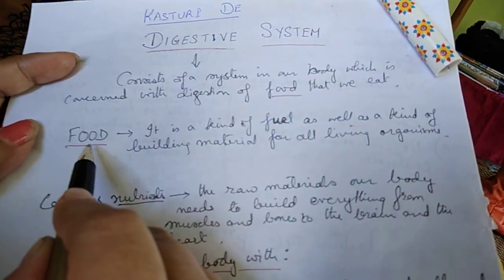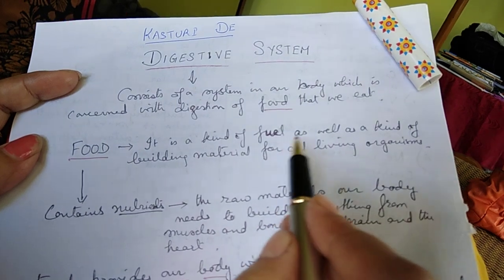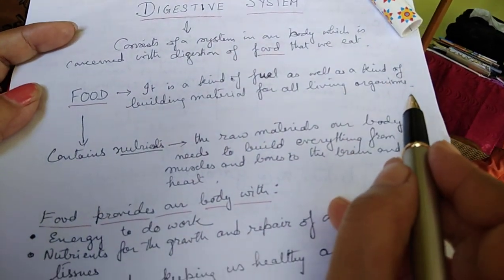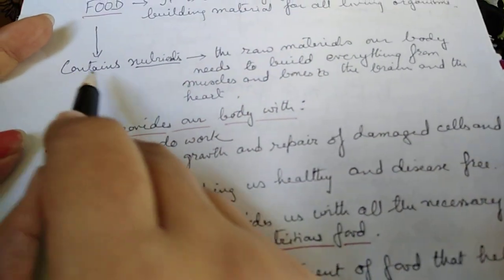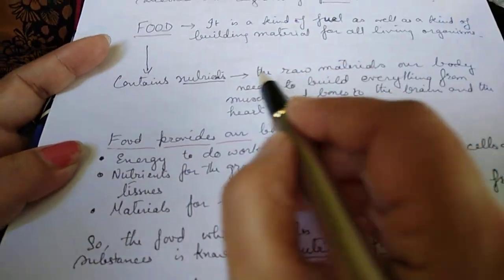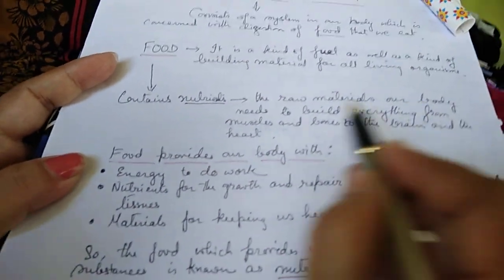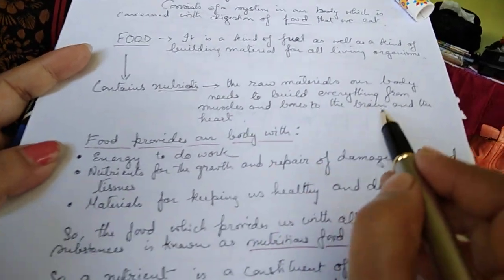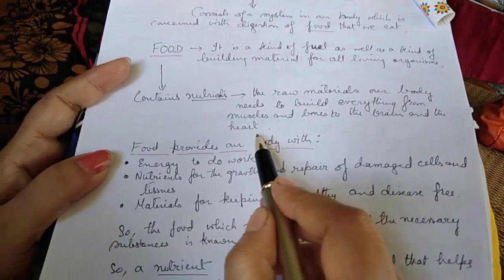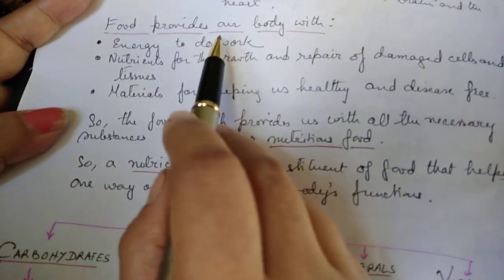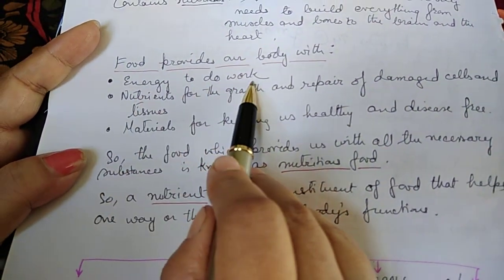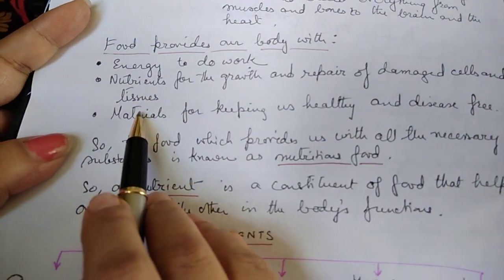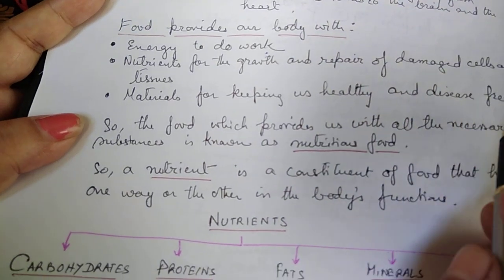Food is a kind of fuel as well as a kind of building material for all living organisms. Food contains nutrients — the raw materials our body needs to build everything from muscles and bones to the brain and the heart. Food provides us energy to do work, nutrients for the growth and repair of damaged cells and tissues, and materials for keeping us healthy and disease-free.